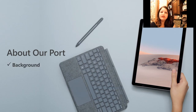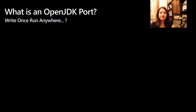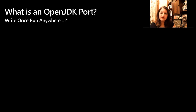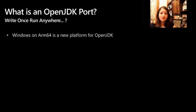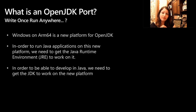Now let's jump into our port. I'll provide background, a few nuances, as well as a timeline. So what is an OpenJDK port? Whenever you have a newer platform — especially a newer architecture or a new OS — we have to make sure Java is available for it. In order to run Java applications on a new platform, we need the Java Runtime Environment. Similarly, to develop on this new platform, we need the JDK — the Java Development Kit — available on this new platform.